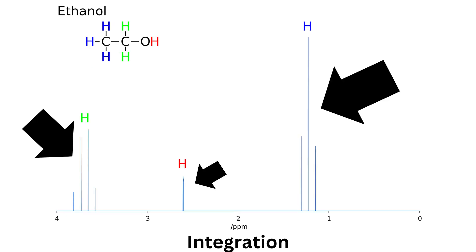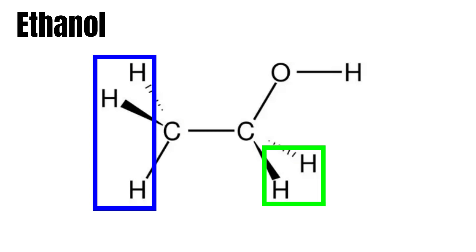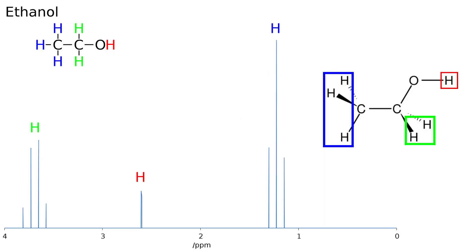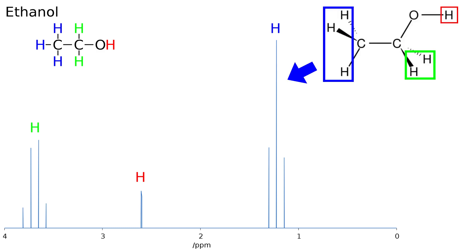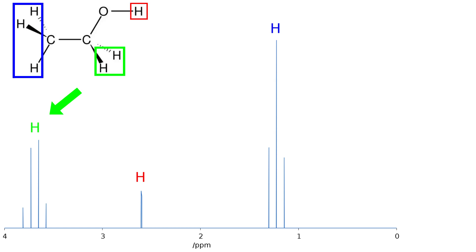As already stated, integration has to do with the relative intensity or height of the peak. This will depend on how many protons in a molecule share an identical chemical environment. The reason this affects the relative intensity of the signal is that all of these protons will share the exact same chemical shift, meaning their signals will be added to one another since they are on the exact same location.